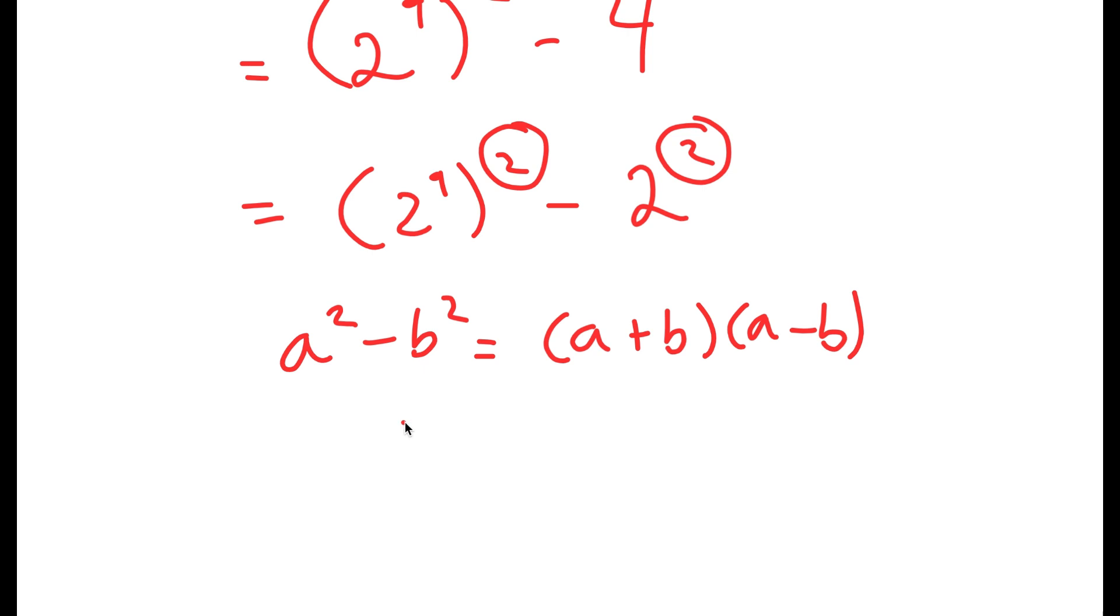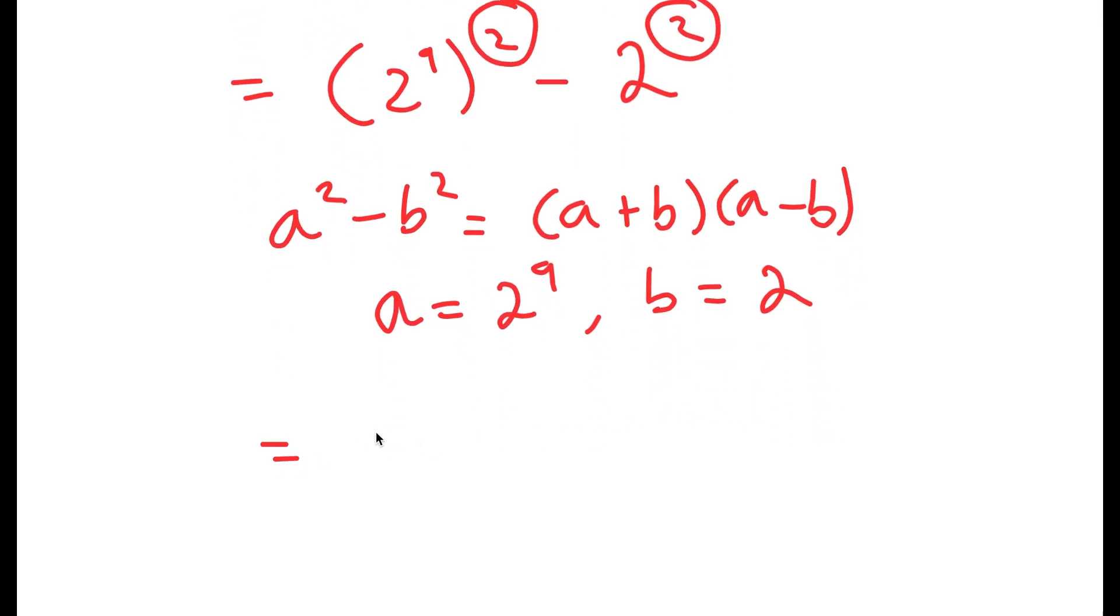So now, in this case, a is 2 to the power of 9 and b is 2. So I get 2 to the power of 9 plus 2 times 2 to the power of 9 minus 2.